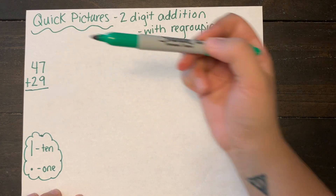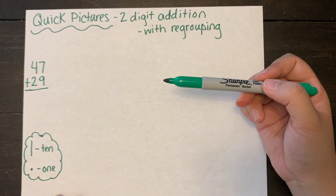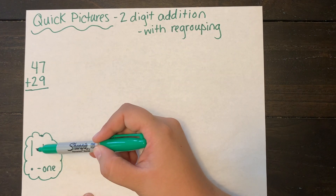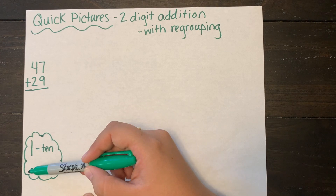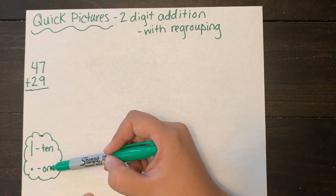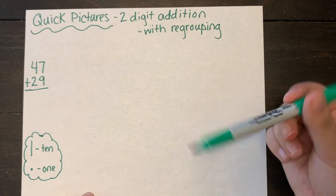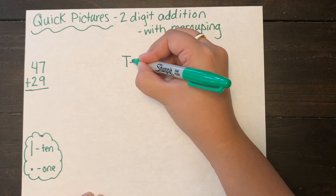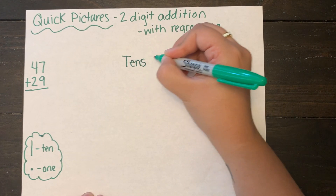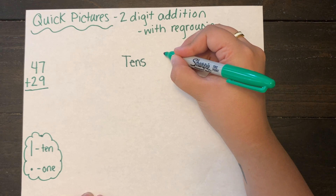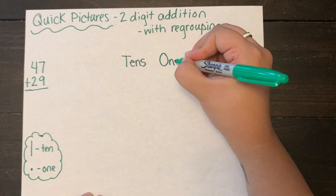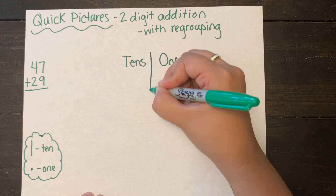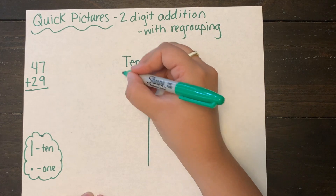So I'm going to be adding 47 and 29 today using quick pictures. I'm using my lines to represent my tens and my dots to represent my ones. I'm going to first start by drawing a t-chart labeling it tens and ones. It's only going to be just the t-chart today and this is called a place value chart.